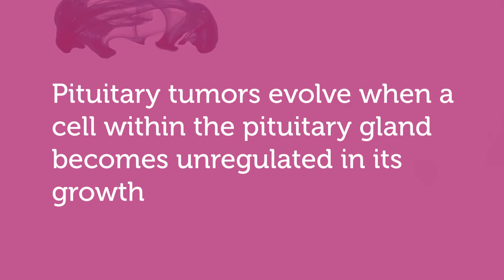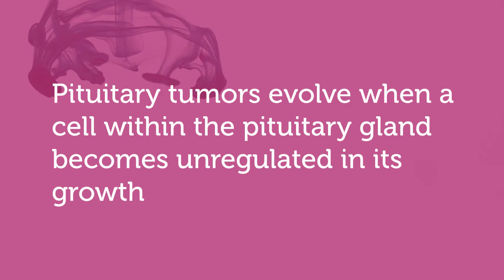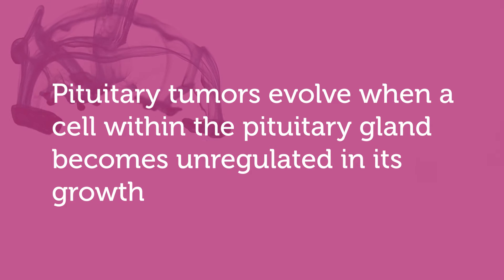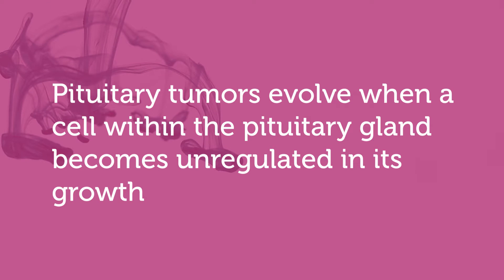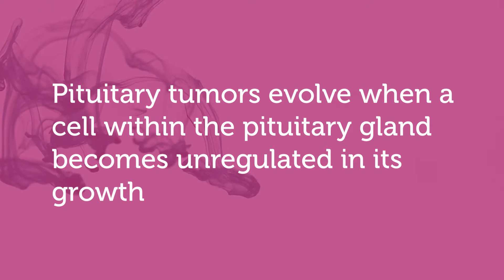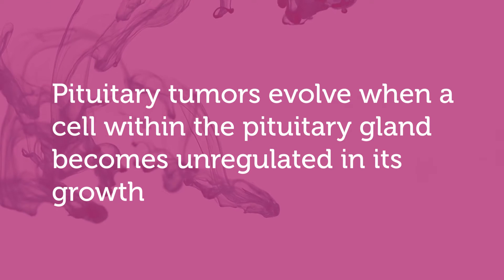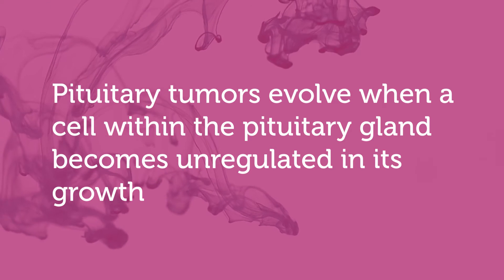Pituitary tumors develop when a cell within the pituitary gland becomes unregulated in its growth. This happens when the genetic control mechanisms of the cell are dysfunctional and the cell begins to grow in an unregulated fashion.